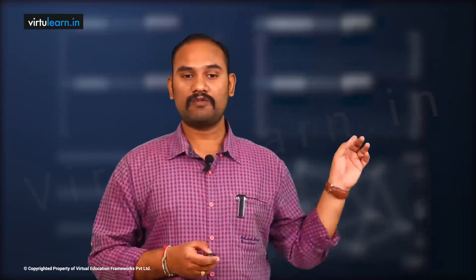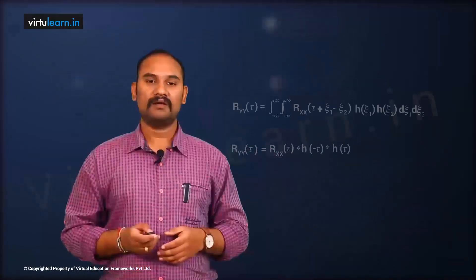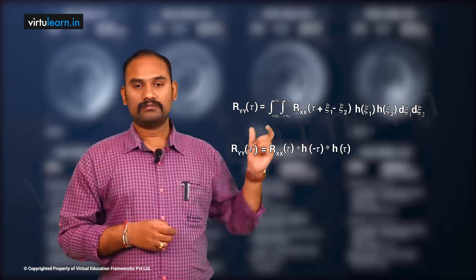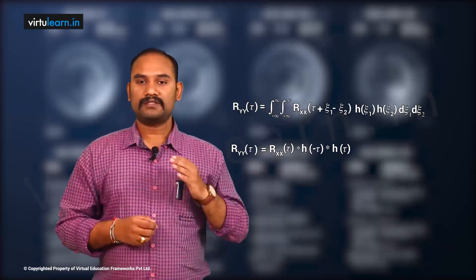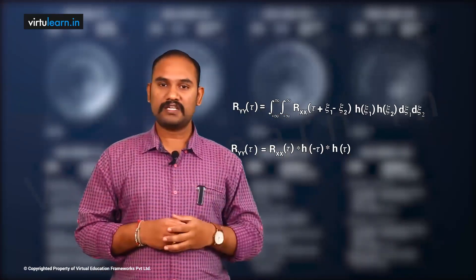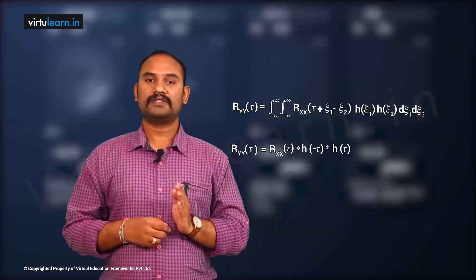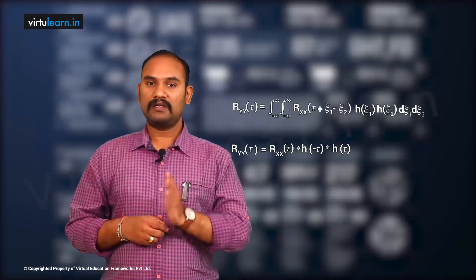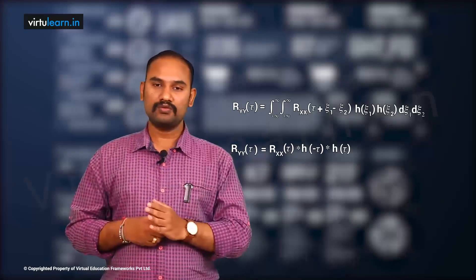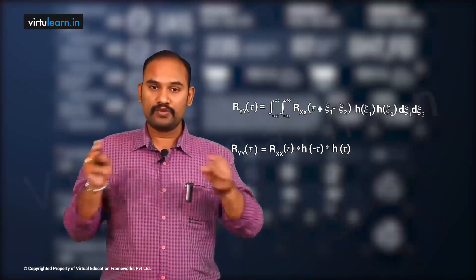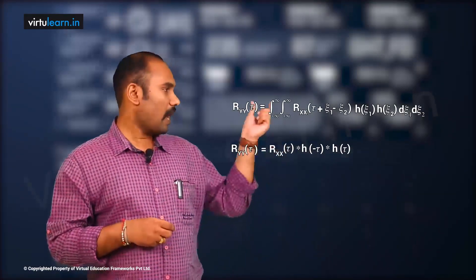Now, the input random process x(t) is wide-sense stationary, and so the response y(t) is also wide-sense stationary. Because the process is wide-sense stationary, the ACF is not a function of the absolute times t − ζ₁ and t + τ − ζ₂, but only a function of their difference. So we can write Ryy(τ).